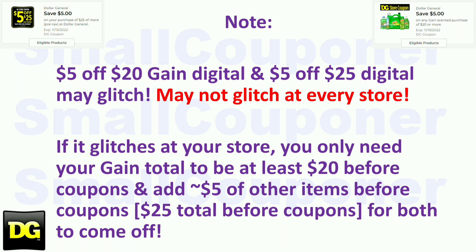I want to note that the $5 off $20 gain store coupon and the $5 off $25 store coupon are both store coupons — they are not supposed to come off together. But at some stores they are coming off together, meaning they are glitching. This may not happen at every store. Some stores have the old system and some have the updated new system. If your store has the old system and is still glitching, both store coupons will come off. If it glitches at your store, you only need your gain total to be at least $20 before coupons, and then add about $5 of other items for a total of $25 before coupons for both to come off.